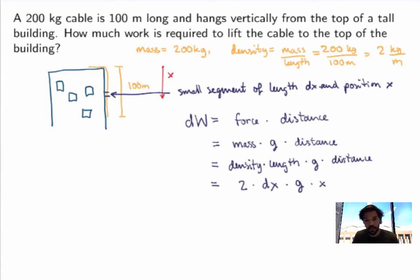Alright, so that's the work that is required to lift this small segment to the top of the building. Now what about the total work? So to calculate the total work required to lift the whole cable, what I do is just sum over all slices. So the total work here will be given by the integral.